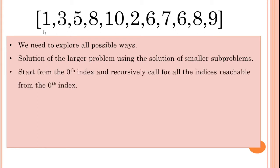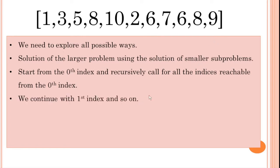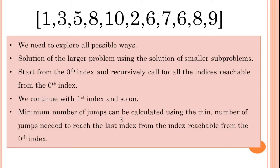Starting from the 0th index, we are going to recursively call for all the indices reachable from the 0th index. For index 1, we are going to recursively try to reach the end index. Recursively, we are trying to work out with all the indices so that we can reach the end index. The minimum number of jumps can be calculated using the minimum number of jumps needed to reach the last index from the index reachable from the 0th index.